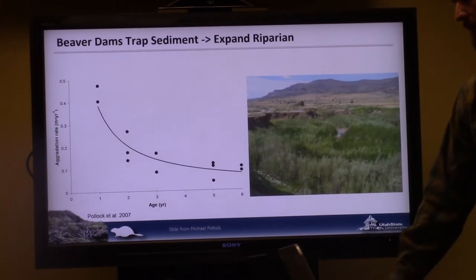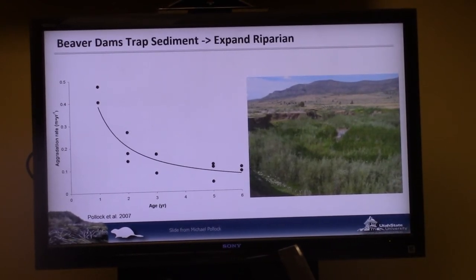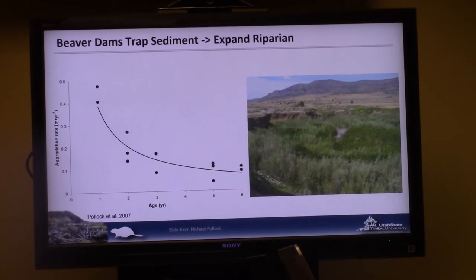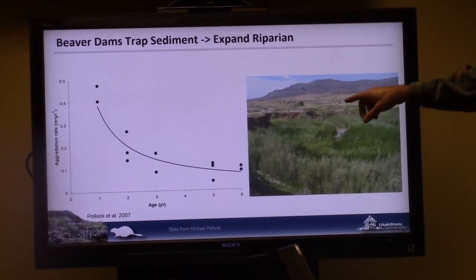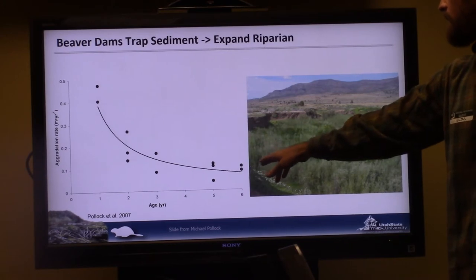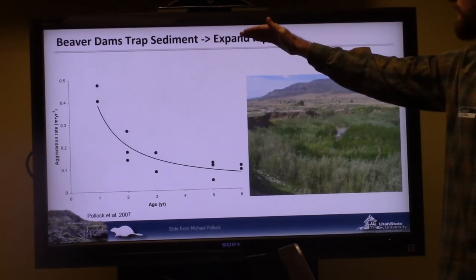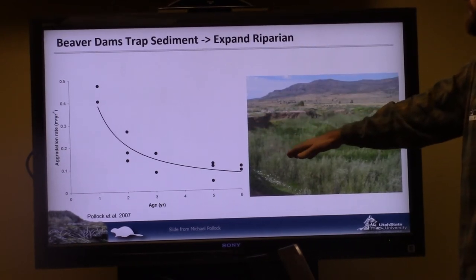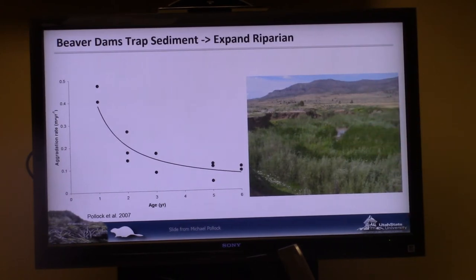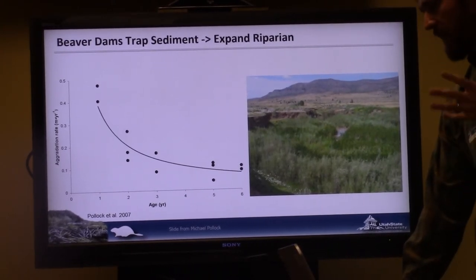Getting into the feedbacks from dam building that we care about: one of the main things their dams do is trap sediment. This figure shows aggregation rate in meters per year on the y-axis versus dam age on the x-axis, from Pollock et al. 2007, showing substantial aggregation rates that tail off over time as a dam fills in. By trapping sediment and spreading it onto the floodplain, beaver create more areas for riparian vegetation to establish, actually expanding the riparian area over time.